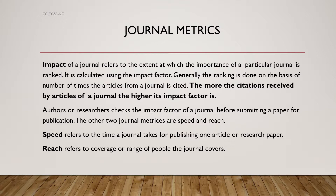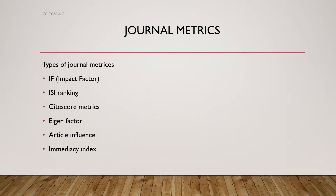Authors and researchers check the impact of a journal before submitting a paper for publication. The two other journal metrics are speed and reach. Speed refers to the time taken by a journal to publish one article or research paper. Reach refers to the coverage or range of people a journal covers. Speed, reach, and impact are the factors on which journal metrics depend.